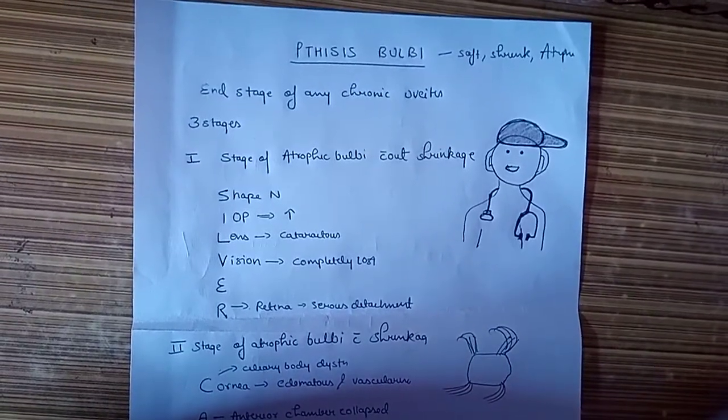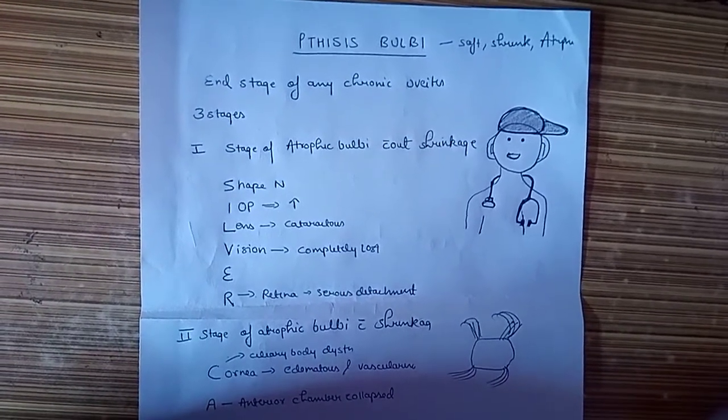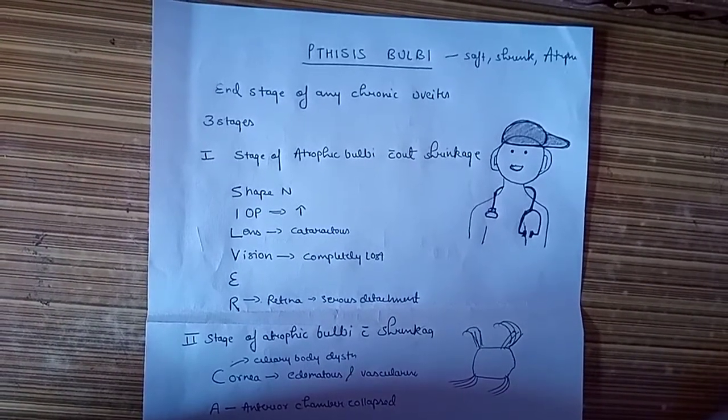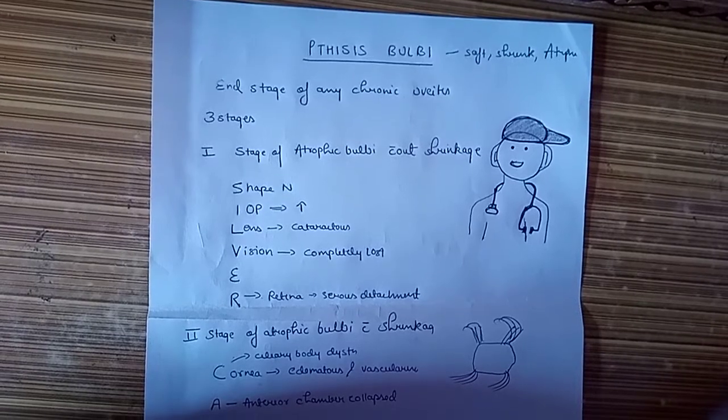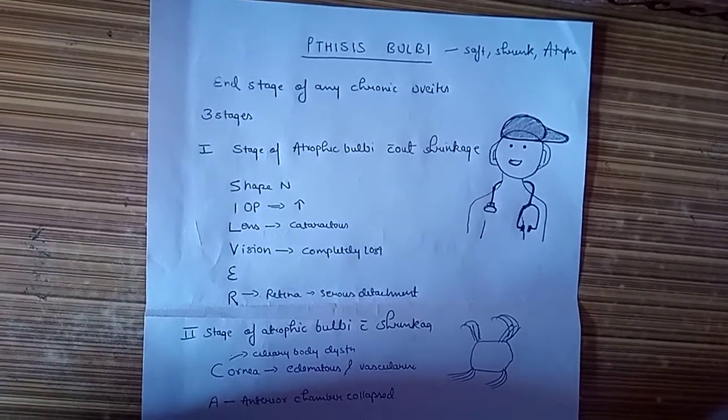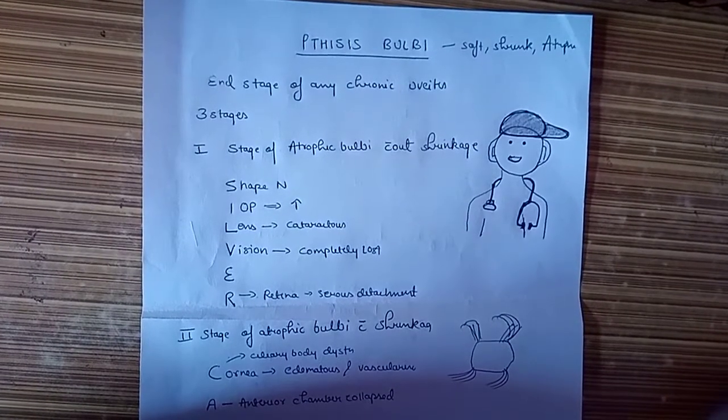Phthisis Bulbi is an end stage of any chronic uveitis where we land up with an eyeball which is soft, shrunken, and atrophic. Now going on with our mnemonic, we land into the first stage of Phthisis Bulbi.